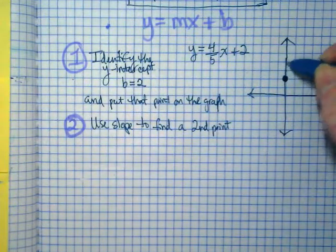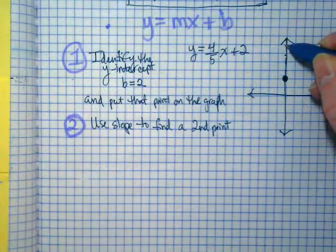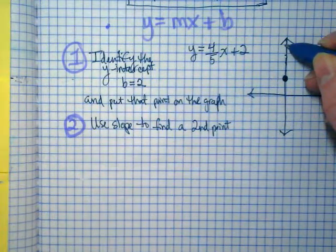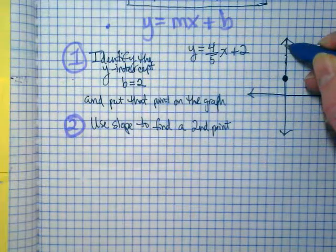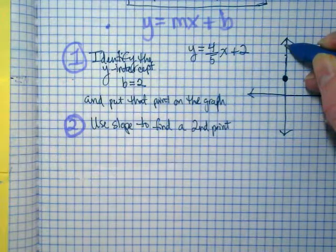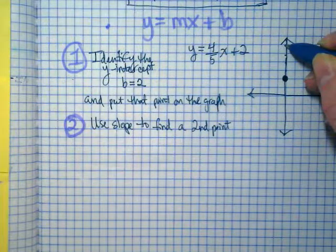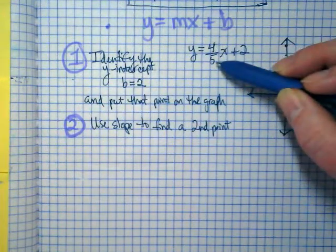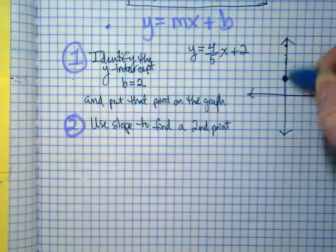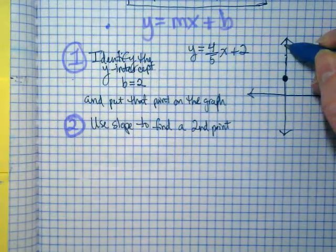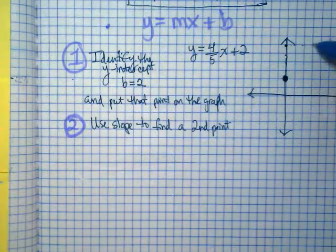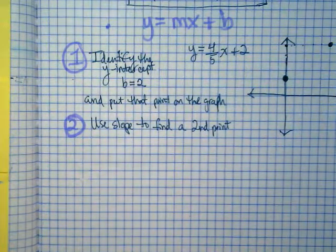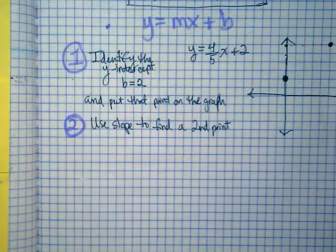We're going to rise up how many? One, two, three, four. And we're going to run across how many? Five. This is our rise, this is our run. So we're going to rise up how many? Four. And we're going to run across how many? Five. And you're going to plot that point.